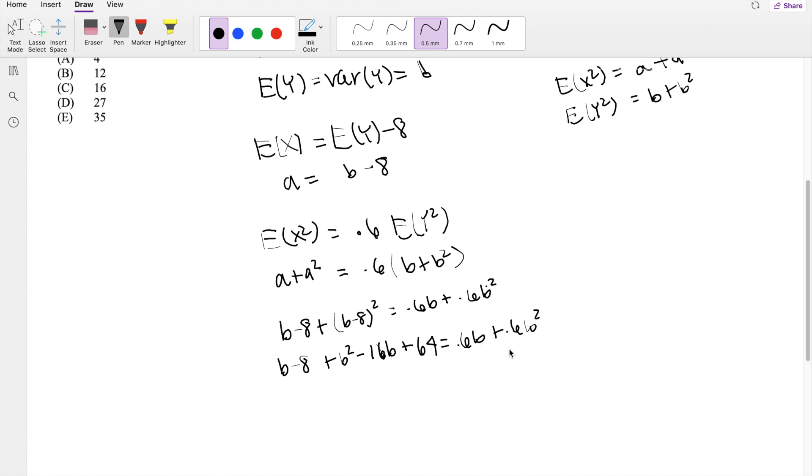So on this side, we're going to bring everything over. b squared is going to be 1 minus 0.6, which is 0.4b squared. How many b terms are there? There's 1, 2, 3, so putting those together, you're going to get negative 16 plus 1, negative 15, minus 0.6b. So that's going to be equal to negative 15.6b. And then lastly, just the coefficients, so 64 and 8, that's 64 minus 8, that's plus 56, is equal to 0.